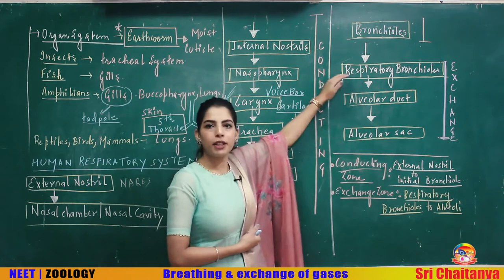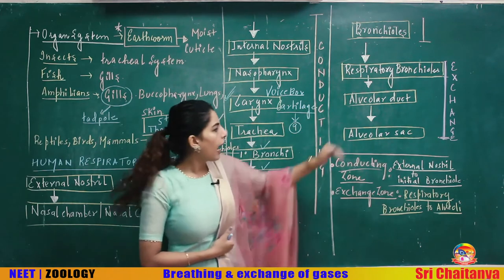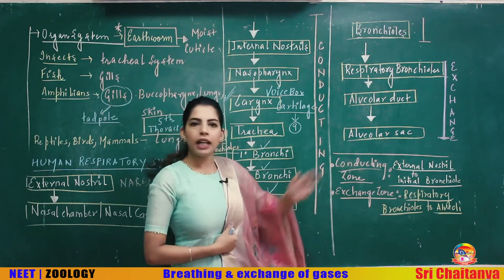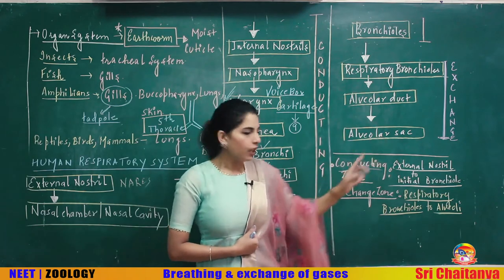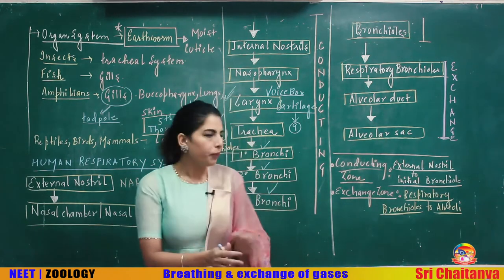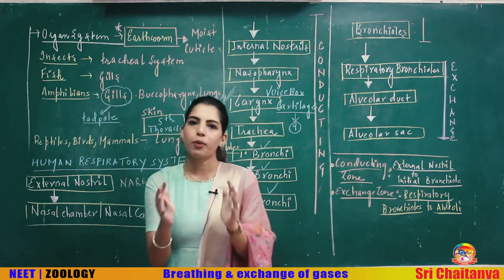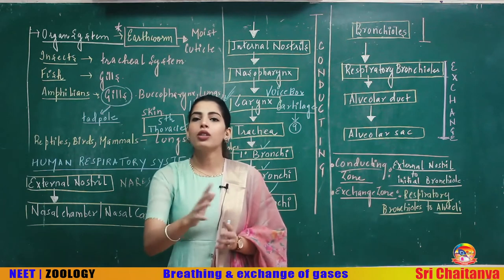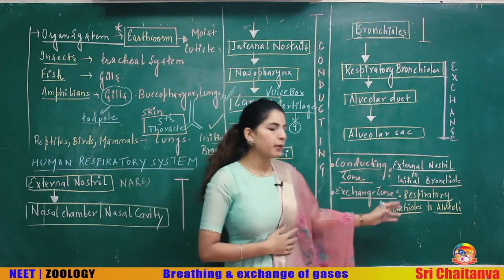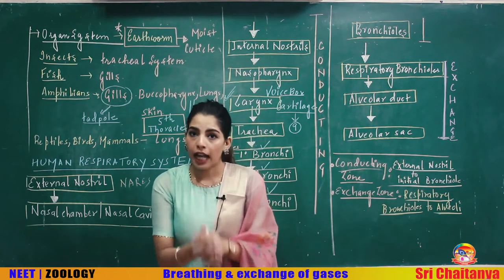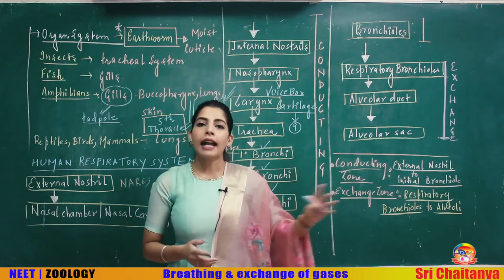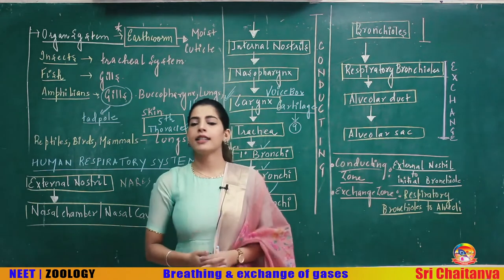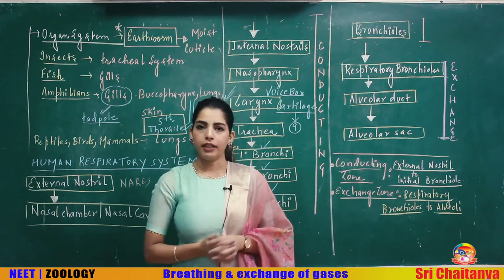From the bronchioles, air leads to respiratory bronchioles, then to alveolar ducts, and finally to alveolar sacs. From respiratory bronchioles to alveolar sacs is called the exchange zone (also called the respiratory zone). The conducting zone starts from external nostrils up to some bronchioles; the exchange zone starts from respiratory bronchioles and ends with the alveoli.